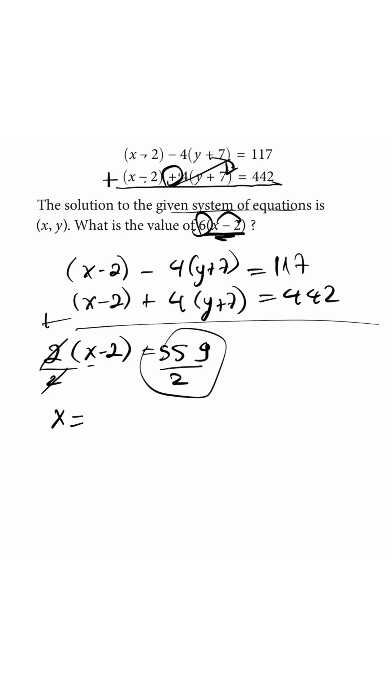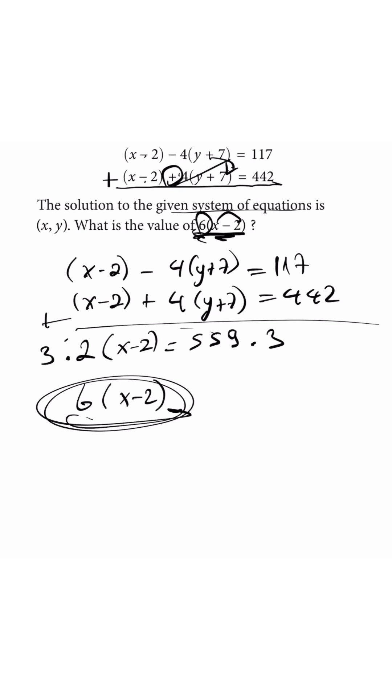But you really don't need to do that, guys. Okay, so here's what I'm going to tell you to do. So 2 times x minus 2 is 559. So how can I get 6 times x minus 2? If I multiply both sides, I can get this, right? Or I can do it the long way, but nobody wants to do that.